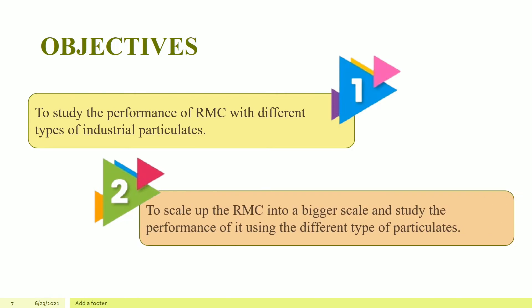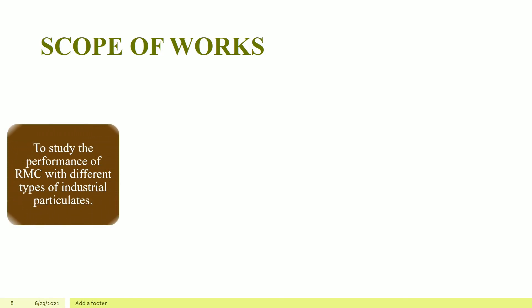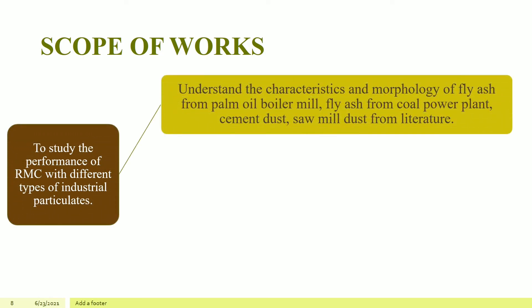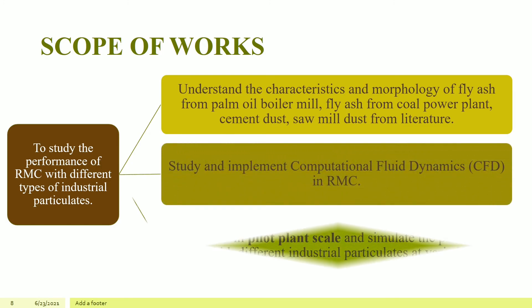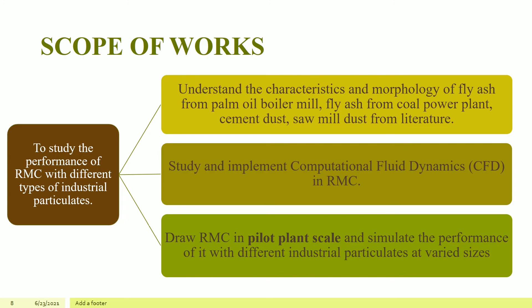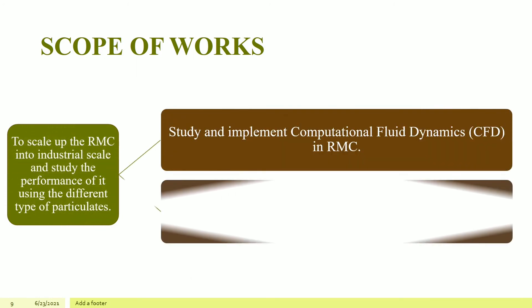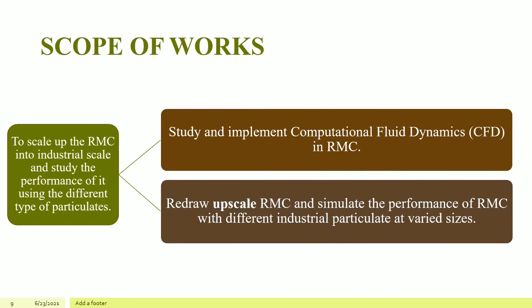The objective of this study is to study the performance of RMC with different types of industrial particulates. This study is also conducted to scale up the RMC into a bigger scale and study the performance of it using different types of particulates. The scope of objective 1 is to understand the characteristics and morphology of 4 different industrial particulates, study and implement CFD in RMC, and draw RMC in pilot plant scale and simulate the performance of it with different industrial particulates at varied sizes. The scope of objective 2 is to study and implement CFD in RMC, draw upscale RMC, and simulate the performance of it with different industrial particulates at varied sizes.